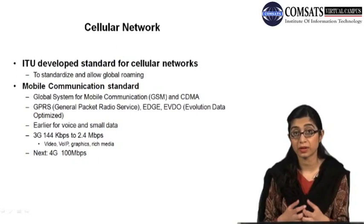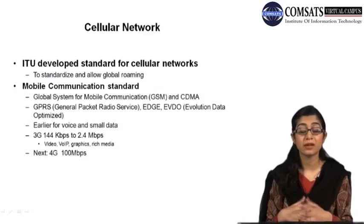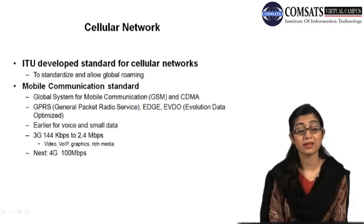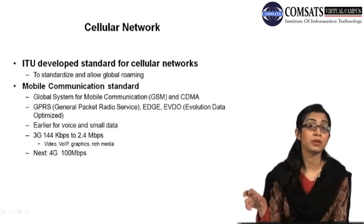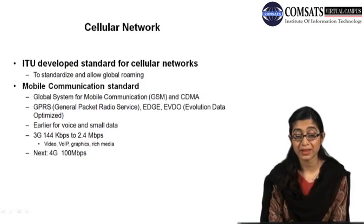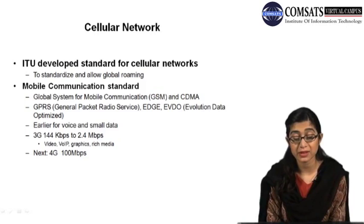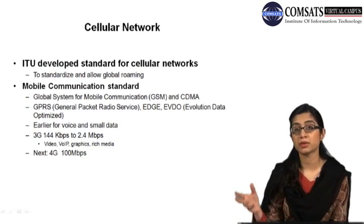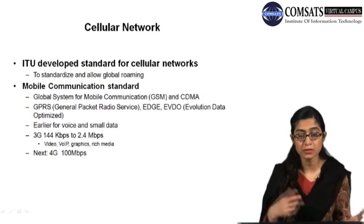Next we have the cellular network, a wireless network developed and standardized by the ITU in 1999 to standardize communication between cellular devices and allow global roaming. There are two main mobile communication standards: GSM, the Global System for Mobile Communication, used in the UK and 120 other countries, and CDMA, used in the USA, India, and other countries. These are two different standards for providing communication between mobile devices.